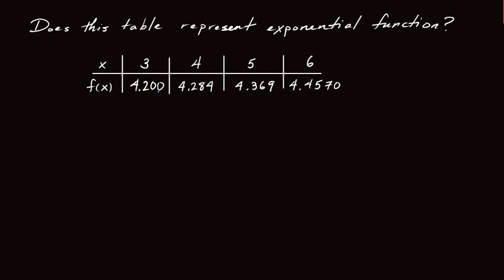Okay, in order to do that, you want to find that constant percentage. And the way you do it is you take the ratio of the two numbers. So we take the ratio of two consecutive numbers. The first pair is 4.284, and then divide it by 4.200. And we plug that into our calculator, and we get about 1.02.